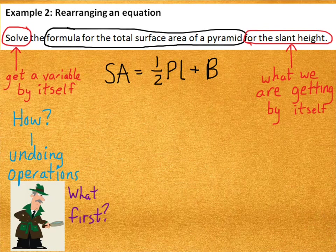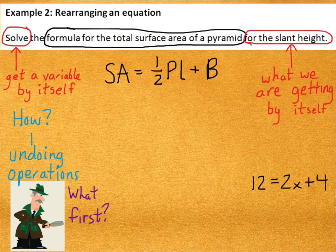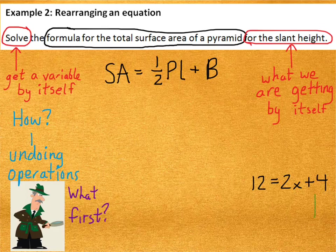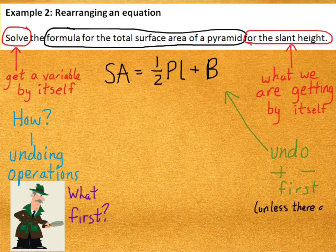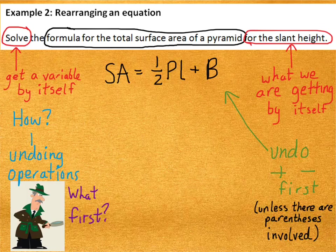Well, consider this just generic equation that I just made up off the top of my head. 12 = 2x + 4. In this equation, we would get rid of the 4 first. Okay? So, just based off of that example, in general, we undo addition or subtraction first. That is, unless there are parentheses involved, which would mean it's a totally different story, but we don't have to worry about that here. So, we're fine.